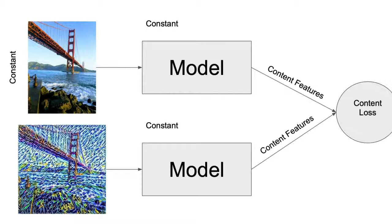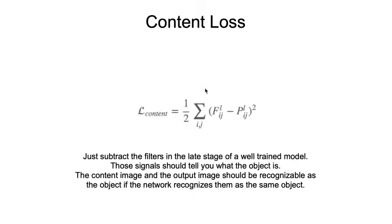So, all we have to do is take an input image, which is the content image, into the model and output the content features. Do the same thing for the input image, get the content features, and make a content loss. This content loss is just the difference of the two content features. And we square them to remove possible cancellations. That's it.